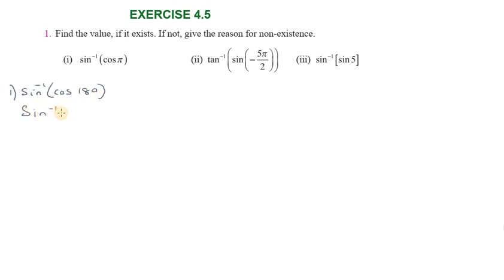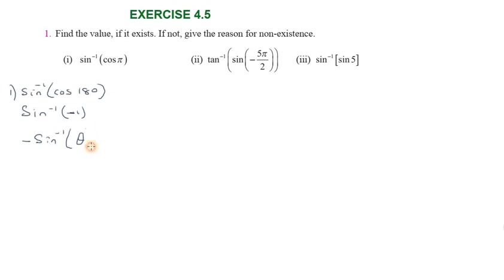Sine inverse of minus one. We apply the property: sine inverse of minus theta equals minus sine inverse of theta. So this is the rule — look at the property from your book, exercise 4. The property gives us minus sine inverse of theta.